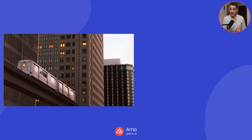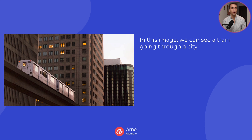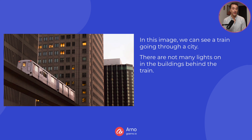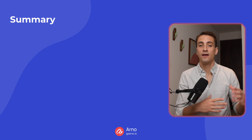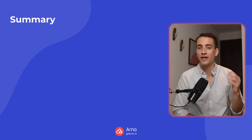And here's the image of the train we saw from before. The first sentence: in this image, we can see a train going through a city. Then I could zoom in on the buildings and say: there are not many lights on in the buildings behind the train. I could then speculate about why there are not many lights on, and say: it may be the case that this photo was taken at the end of the work day after everyone has gone home.